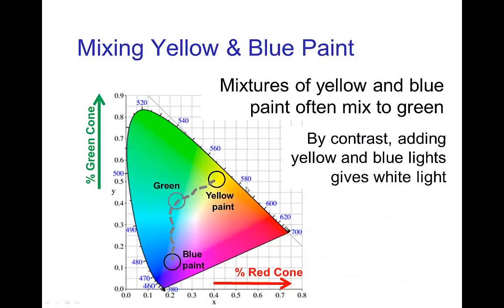When you mix yellow and blue paint, the resulting color is often green. Notice that because yellow and blue are additive complement colors, mixing yellow light and blue light would result in white — they are on opposite sides of the white point. But when you mix pigments, the connecting line in the color diagram is not a straight line; it follows some strange, somewhat unpredictable path.